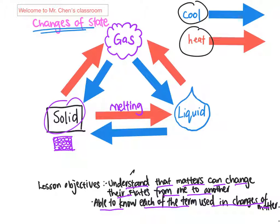During the melting process, the solid actually receives enough energy that allows the particles in it to break away from each other. When they break away from each other, they become really loose, and when they become more loose the substance is actually able to become formless.